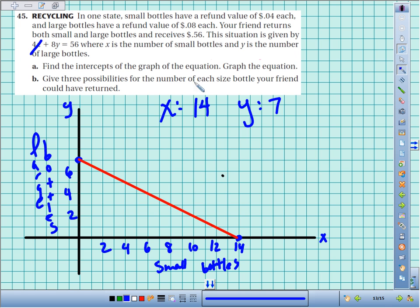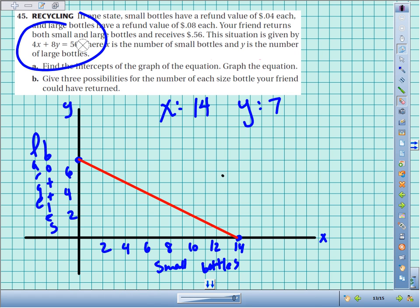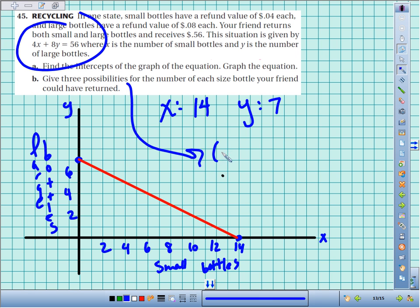You have three possibilities for the number of each size bottle your friend could have refunded. So remember, a line is just an infinite number of solutions. It's an infinite number of itty-bitty points that are all solutions to this original equation. So any point on this line will make this equation true. We're supposed to come up with three possibilities. Well, I'm going to use the extremes first. I could have no smalls and 7 large. I could have 14 smalls and no large. And then let's look for some nice other intersection spots, like right there. We could have 2 smalls with 6 larges.